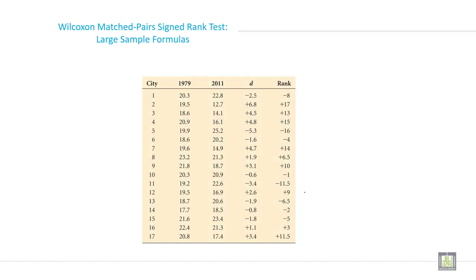This is the data given city wise. Total cities is 17 and this is the data of 1979 and this is the data for 2011. So just try to find out the difference, D for difference here. So difference and then here put the rank of difference.